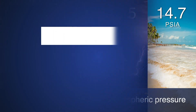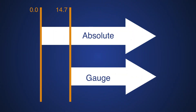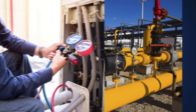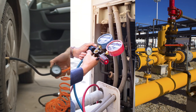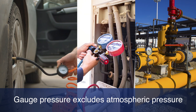Gauge pressure, on the other hand, subtracts the atmospheric pressure from the equation, making it easier to focus solely on what is being monitored, without having to subtract whatever the atmospheric pressure may be at that time. For this reason, gauge pressure is typically the most common choice when measuring pressure.